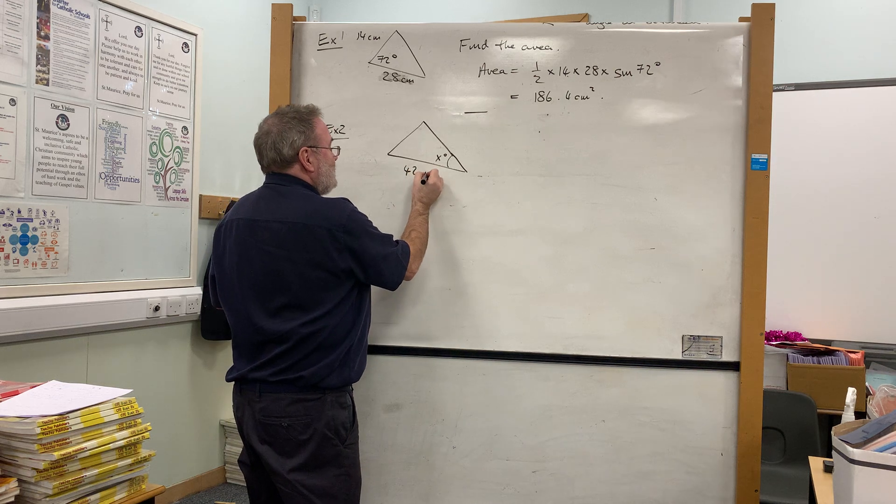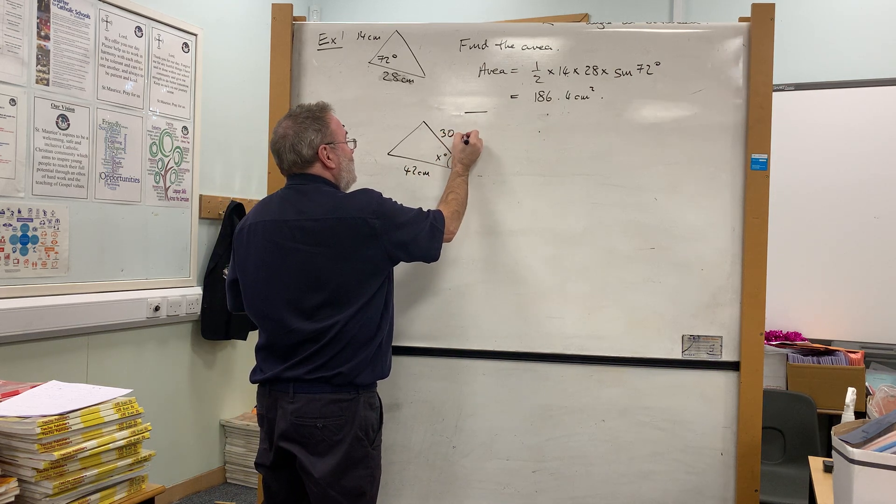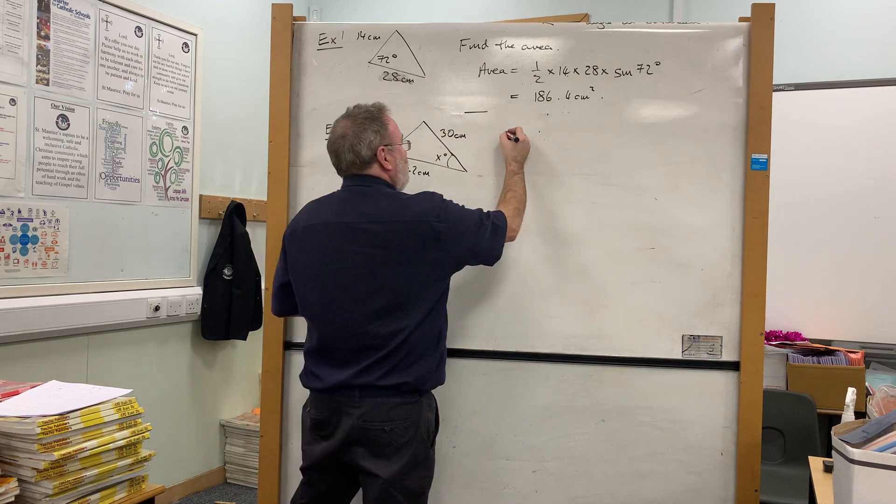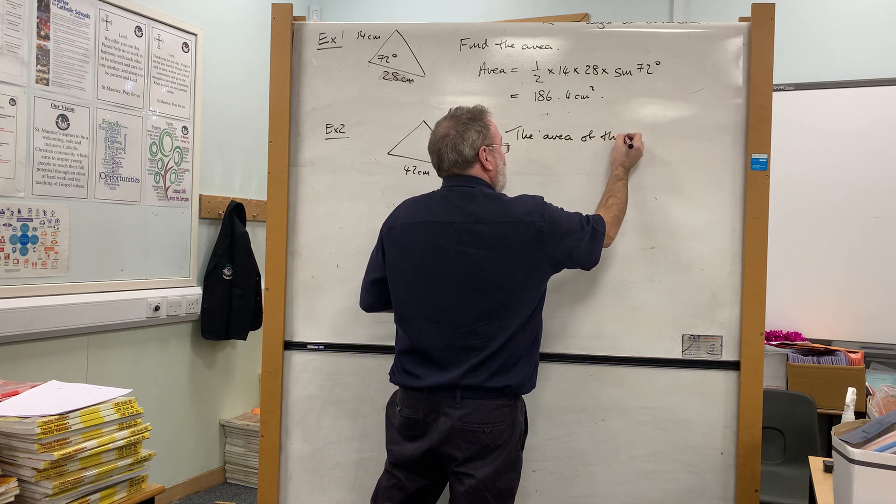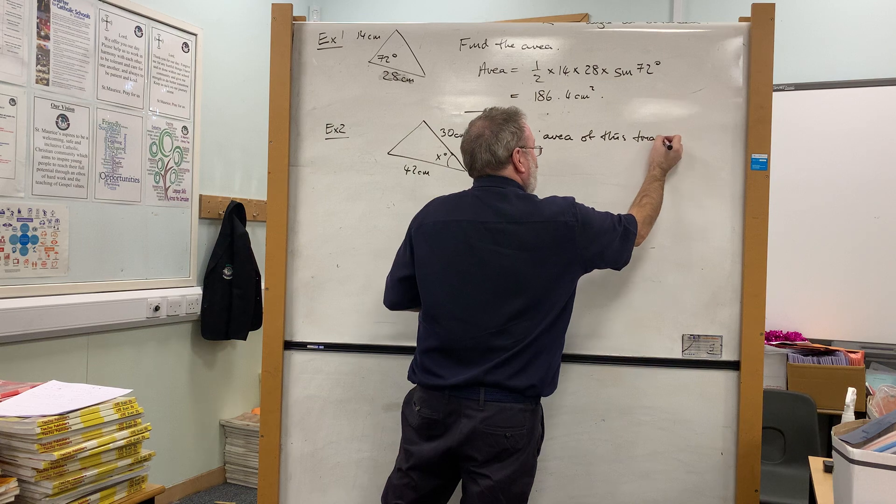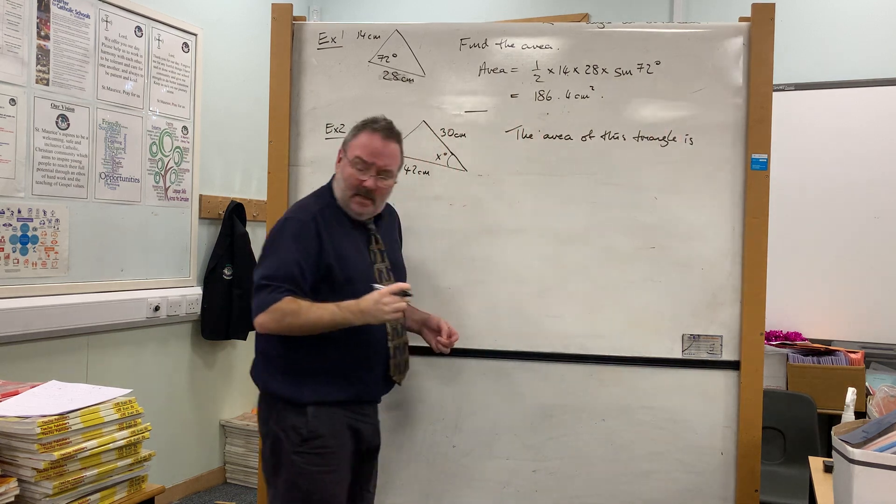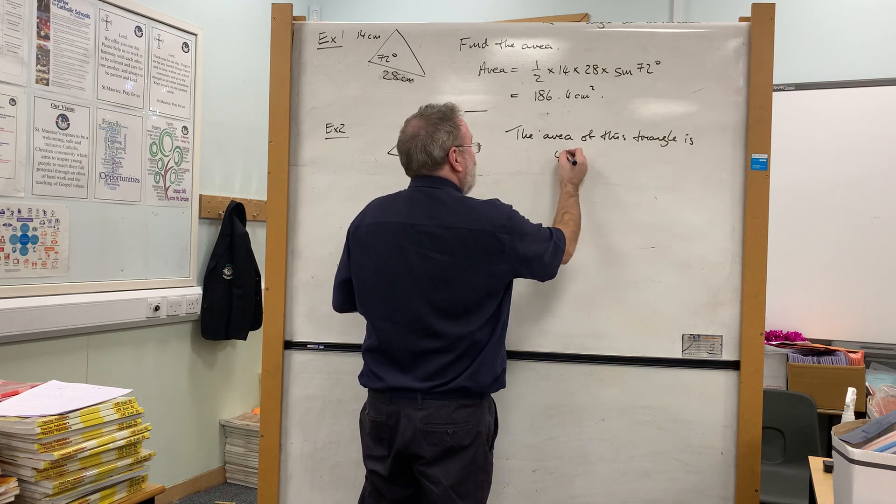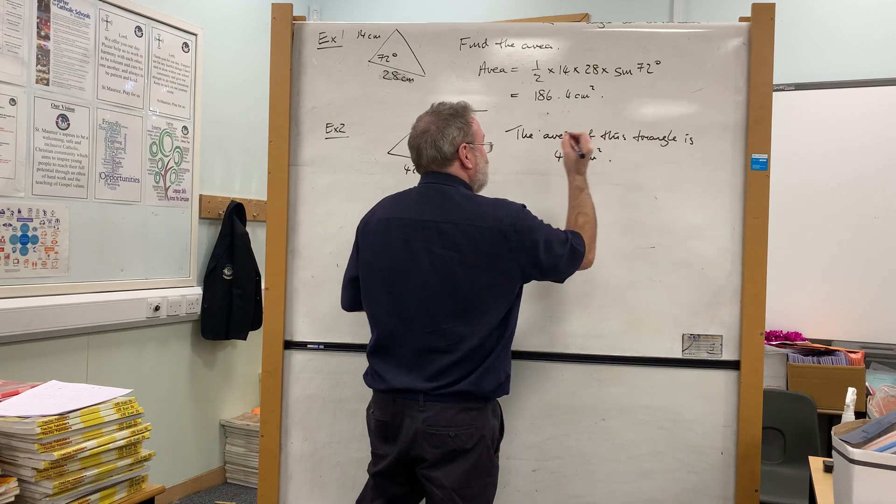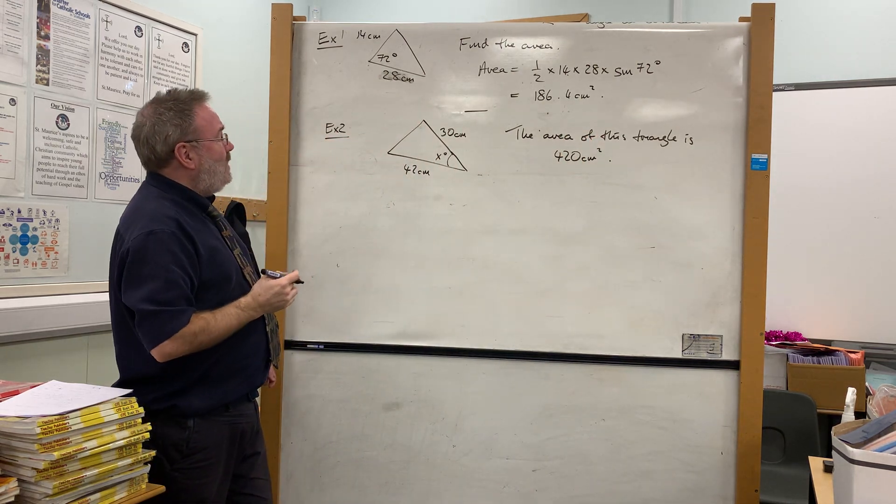We're going to take the two sides and we're also going to be told the area of the triangle. So the area of this triangle is 420 square centimeters. Now how's that going to help us?